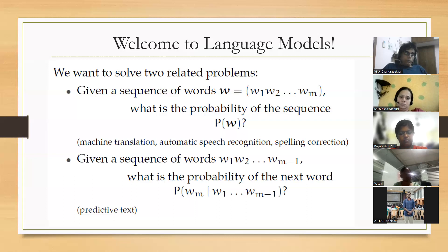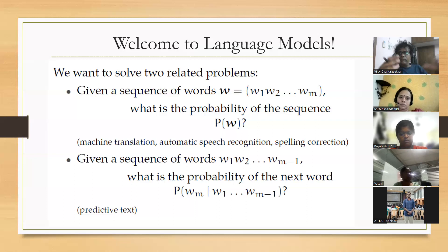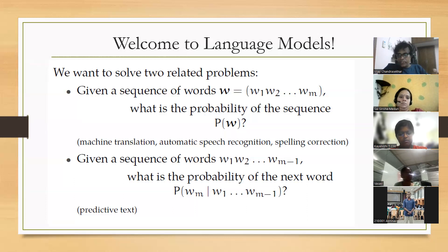We don't have that kind of luxury, so we would work with a limited corpus — a small set of sentences — and try to figure out these probabilities. Two probabilities: one, given a sequence of words, what is the probability of the sequence; and two, given a sequence of words, what is the probability of the next word. These are the two problems that interest us.